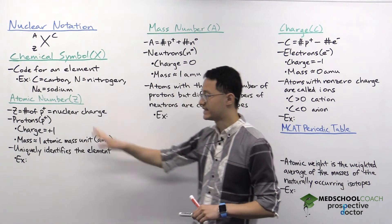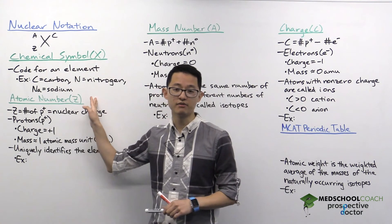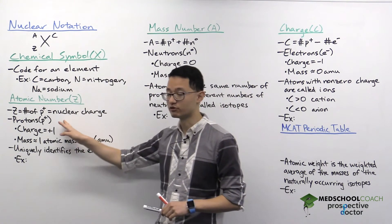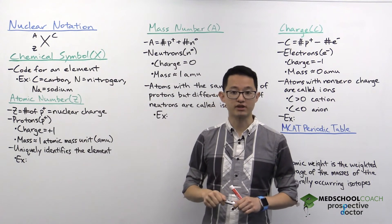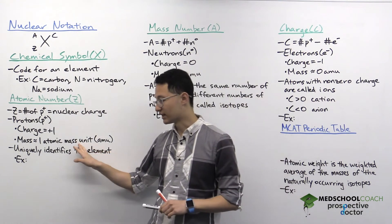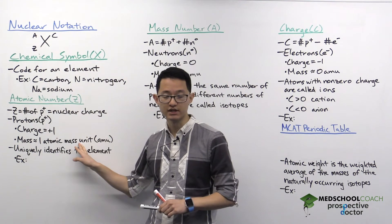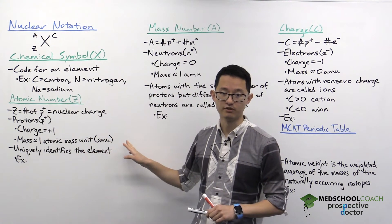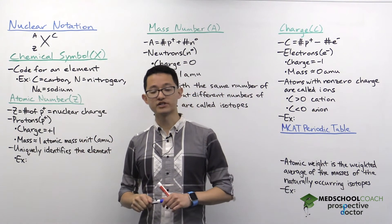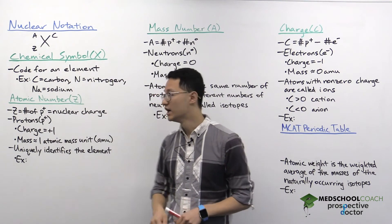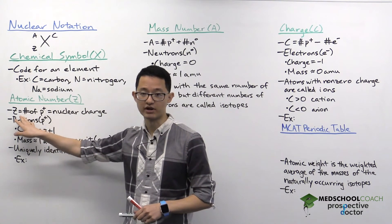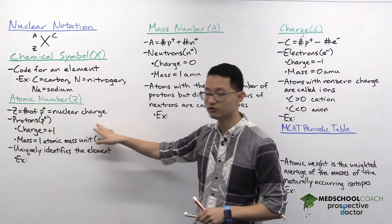So now let's look at Z, which is the atomic number. The atomic number is equal to the number of protons. Protons are located in the nucleus. They have a charge of plus one and a mass of approximately one atomic mass unit, or one amu. Now, since the only other subatomic particle in the nucleus are neutrons which have no charge, you can also think of the atomic number as being equal to the nuclear charge.